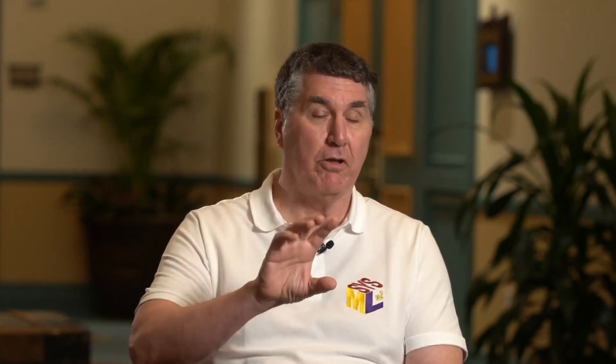We have a textual notation in addition to a graphical notation and they are complementary renderings of the same underlying model, so you can go back and forth between the textual and graphical notation, and we're finding that to be very, very powerful.